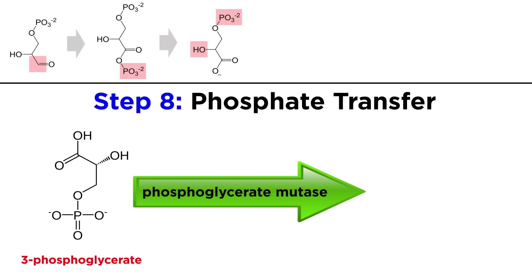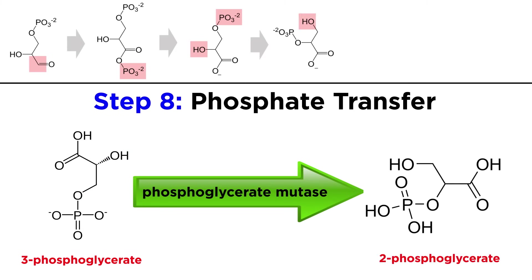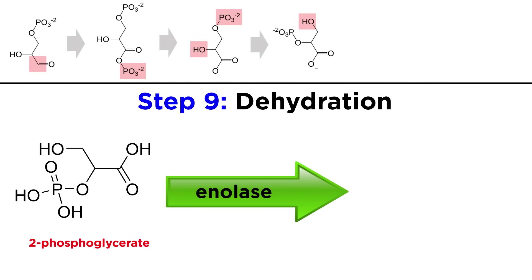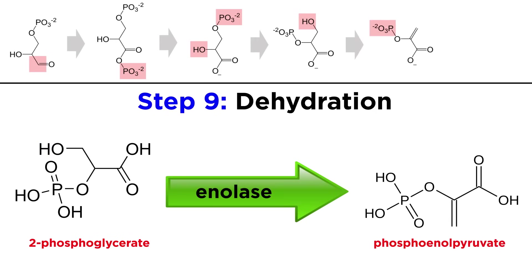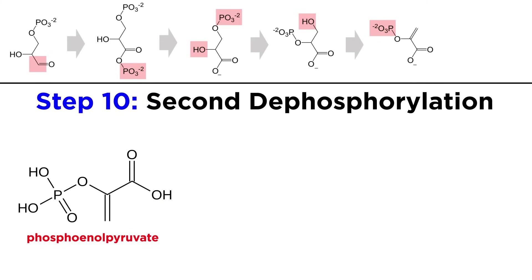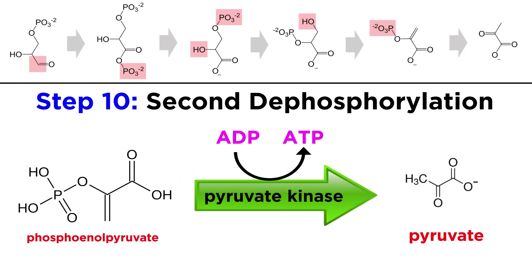Then, phosphoglycerate mutase transfers the remaining phosphate from this hydroxyl to the next one over, to make 2-phosphoglycerate. Then enolase catalyzes a dehydration, resulting in the loss of this hydroxyl group, which will produce phosphoenolpyruvate. And lastly, the remaining phosphate group is transferred to an ADP by pyruvate kinase, generating another ATP and the pyruvate we discussed before.